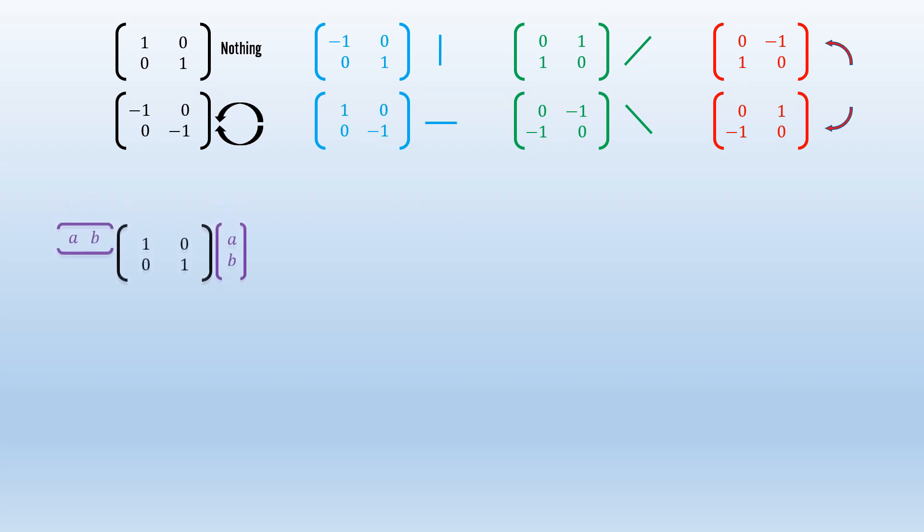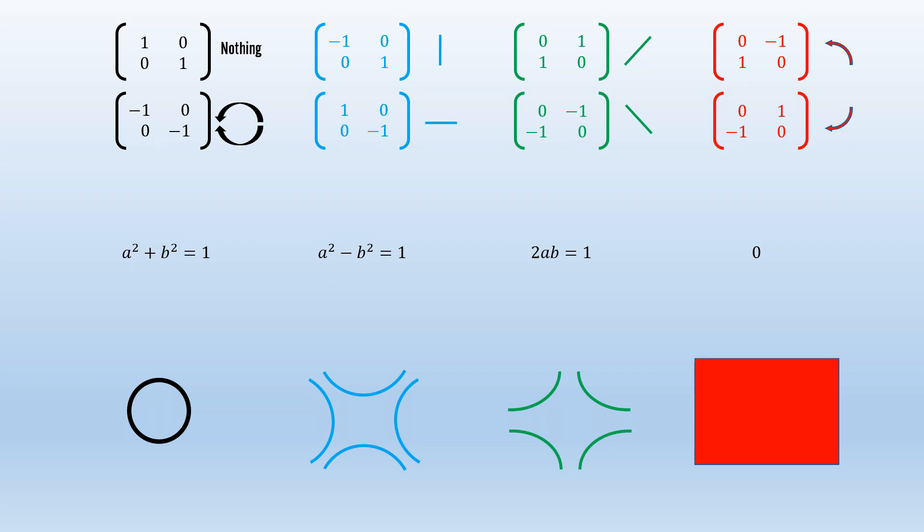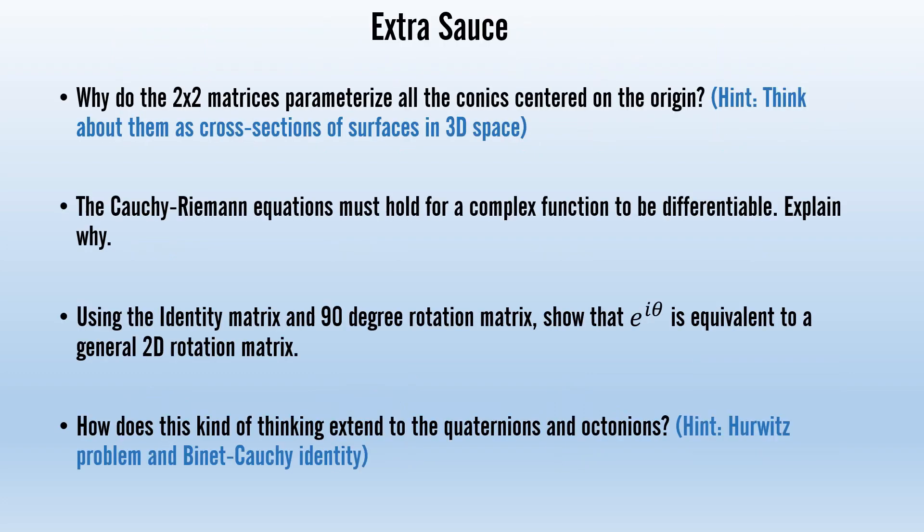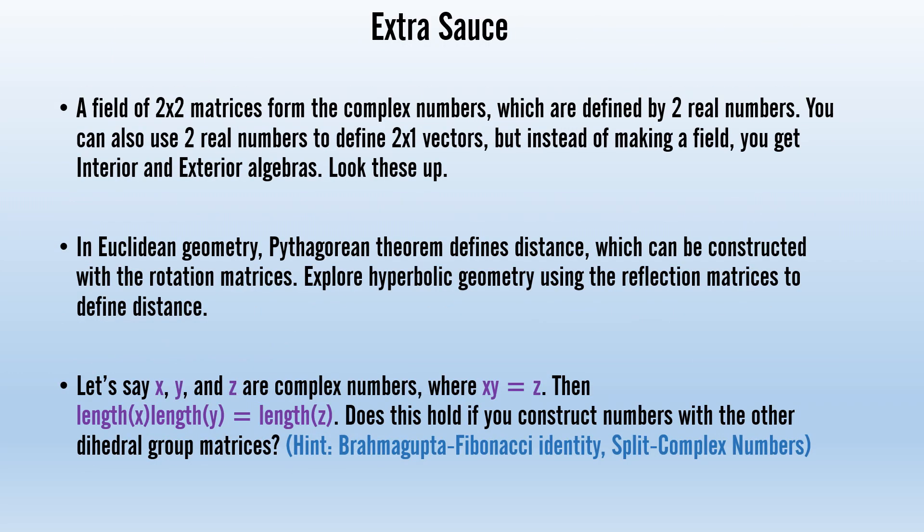If you square vectors using different dihedral matrices and you constrain those expressions to a constant value, then all the vectors that fit this constraint will draw out the conic sections. For the identity matrix, you get a circle. For the horizontal and vertical reflections, you get hyperbolas. For the diagonal reflections, you get the rational functions, and all of these curves are tangent to the circle. The only exception is the 90 degree rotation, which is always zero, so it cannot be set to a constant value. There are many more ideas I tried to fit in this video, but for the sake of brevity, I will put them all here in the form of queries that you can go explore yourself.